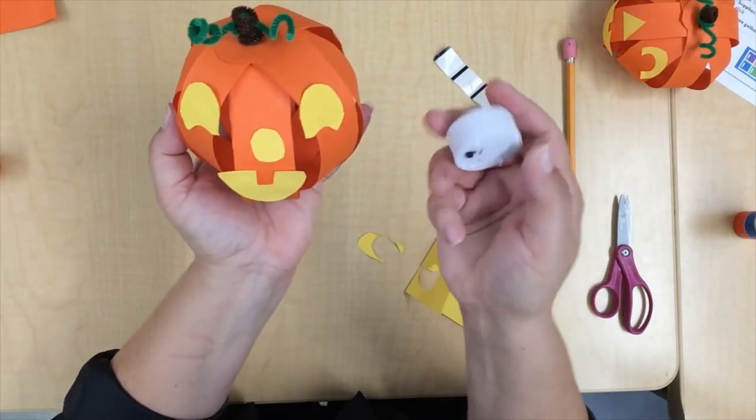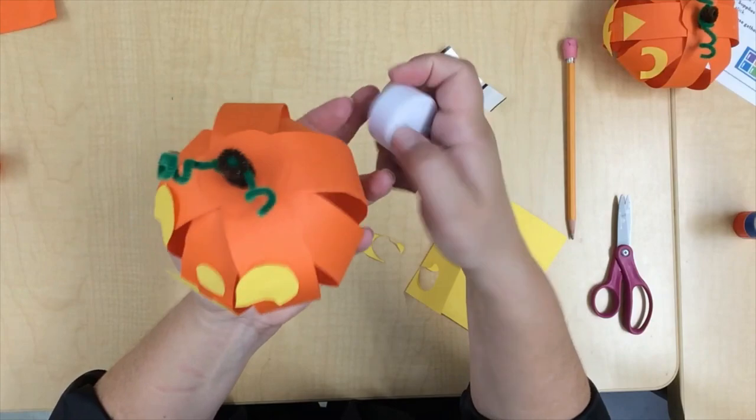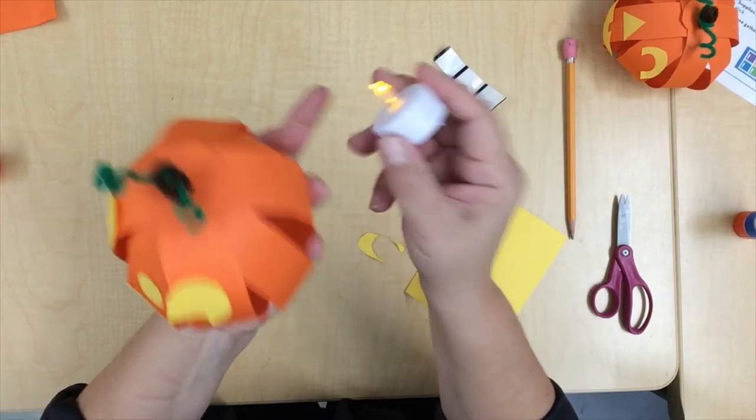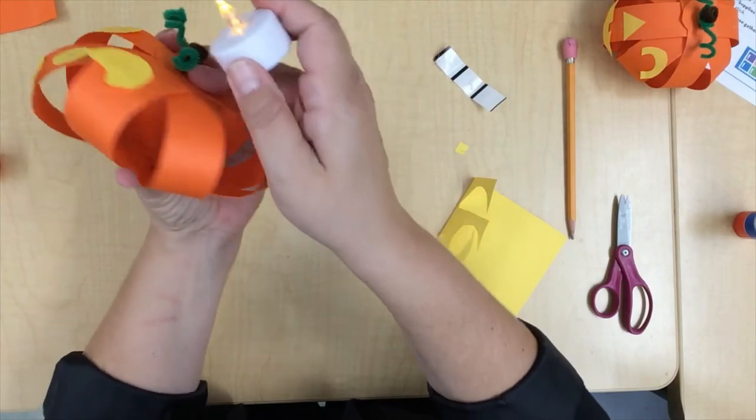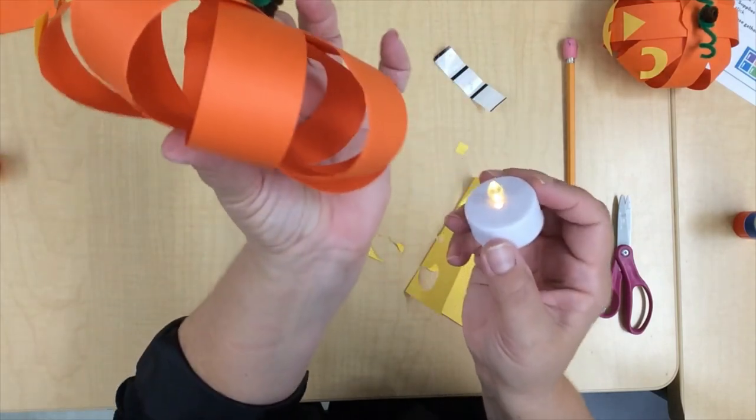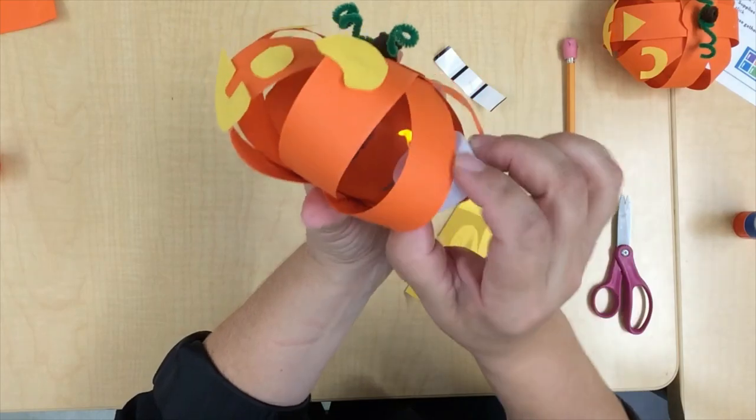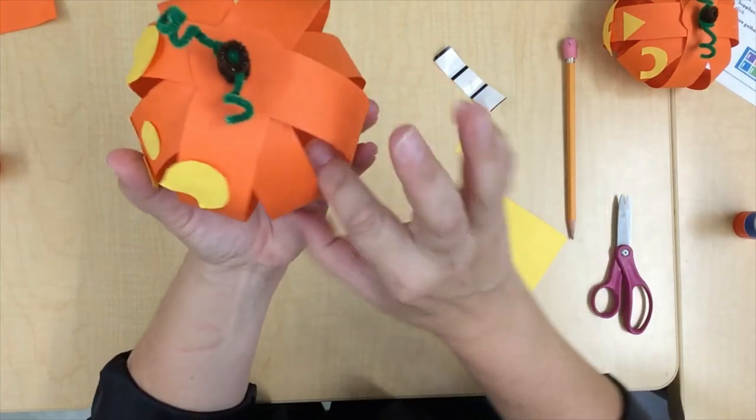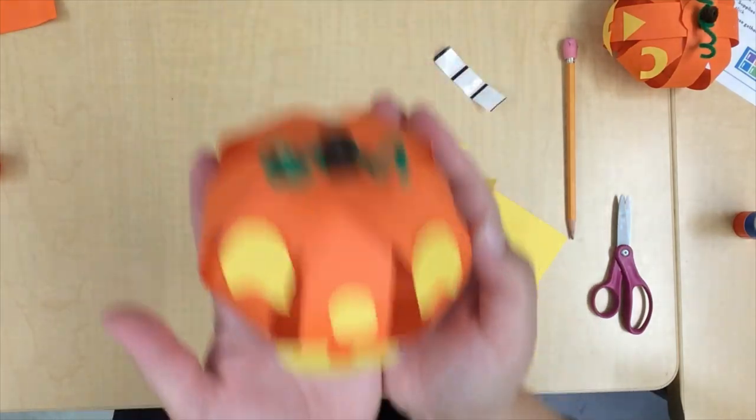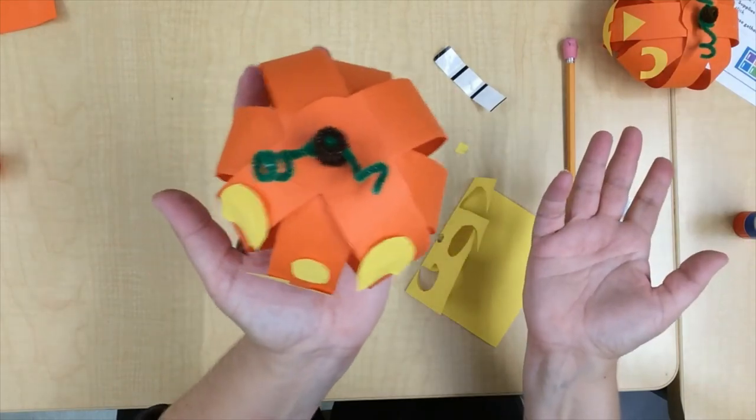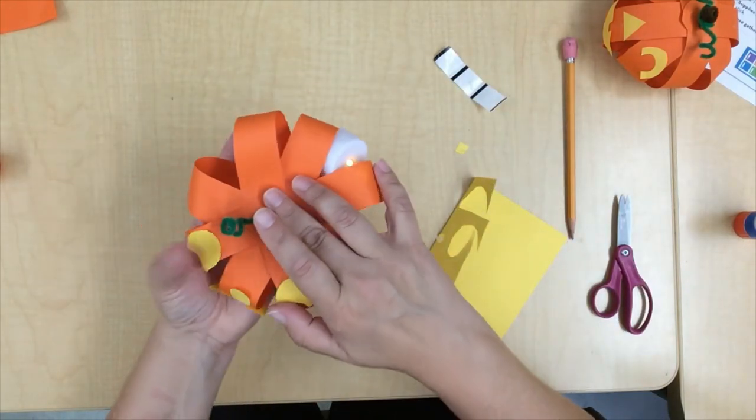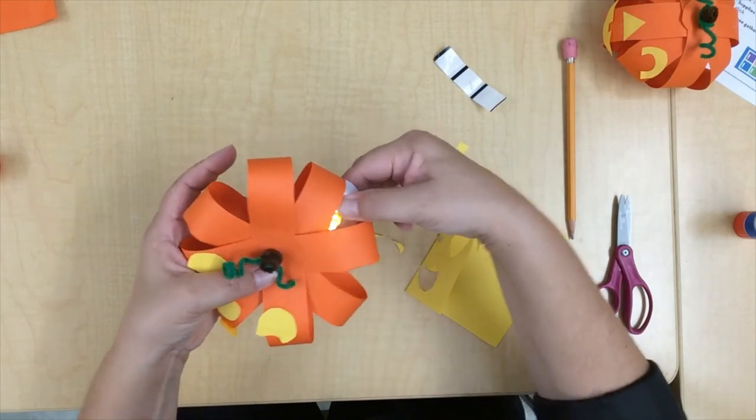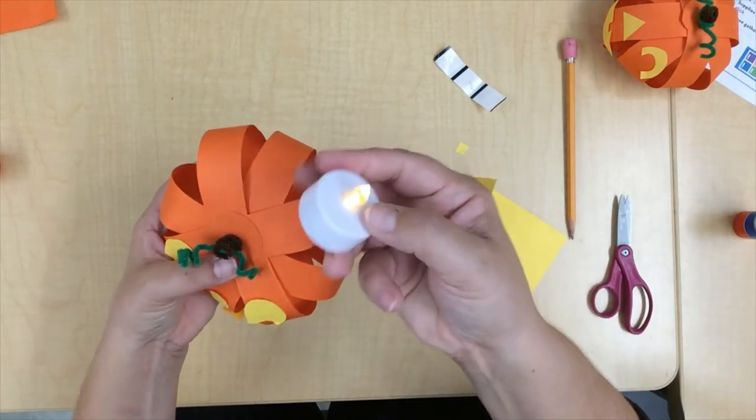In order to put the candle on, you have to flip the switch so that it glows. And now squeeze your pumpkin down like that, put your candle inside, and stand it upright. And when you're ready to turn it off, squeeze it again and carefully take your light out. Shut it off.